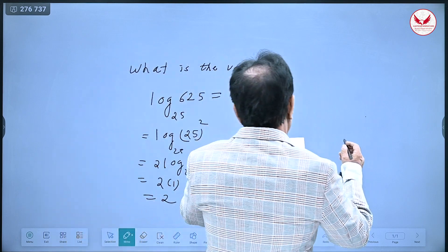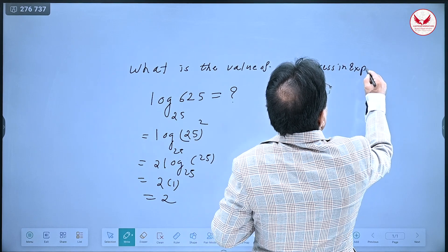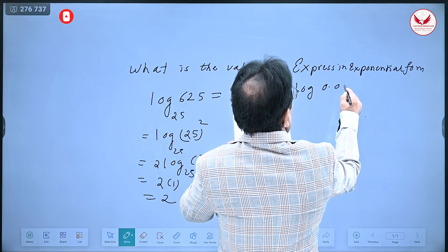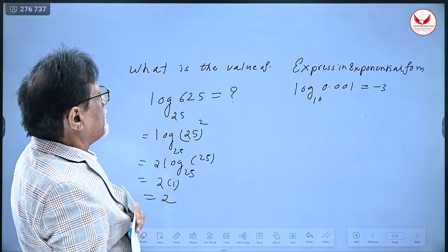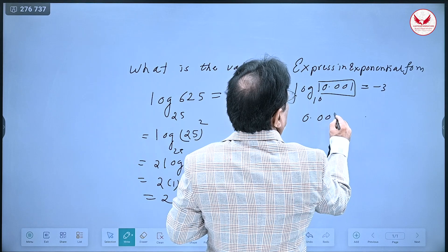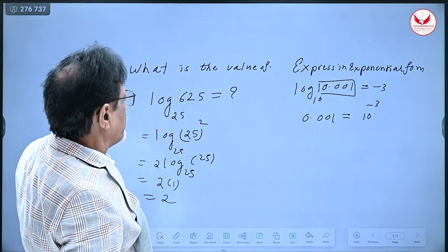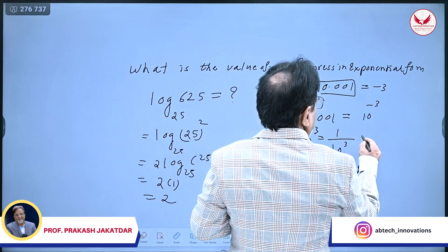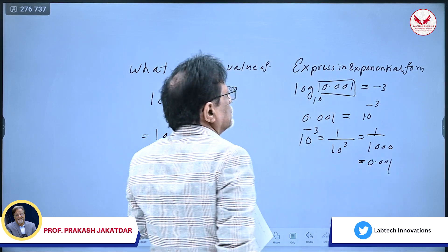The next problem: express log of 0.001 to the base 10 equals minus 3 in exponential form. As I said, you keep the number 0.001 here, the base 10 goes here, and minus 3 becomes the power. So, 10 raised to minus 3 is 0.001. Why? Because 10 raised to minus 3 is 1 over 10 cubed, which is 1 over 1000, and that equals 0.001. That can be done in this manner.